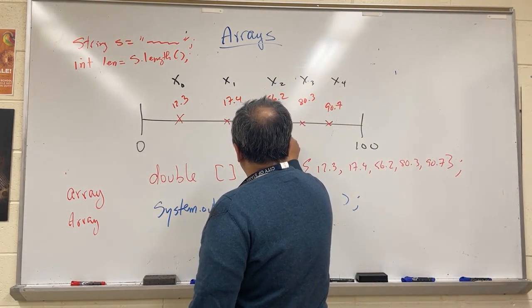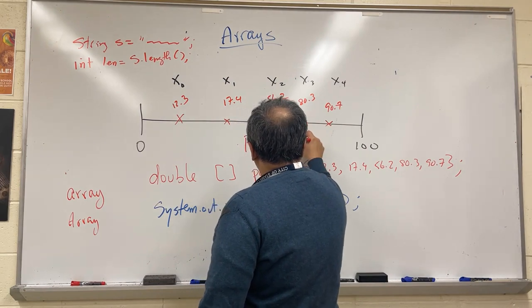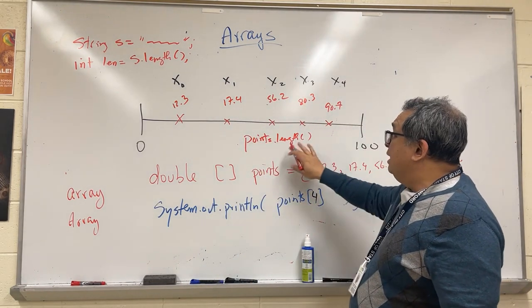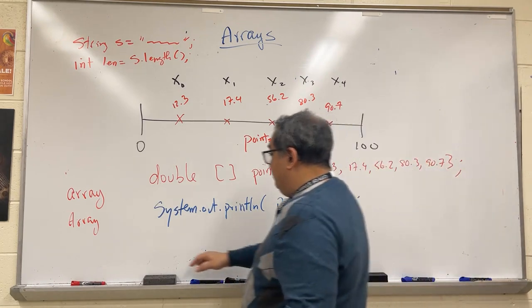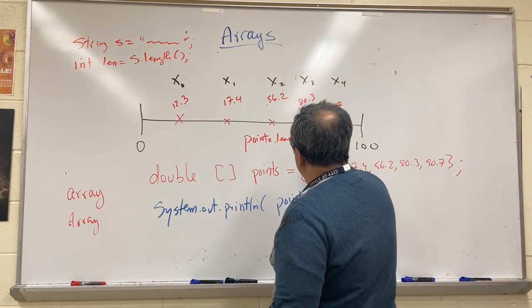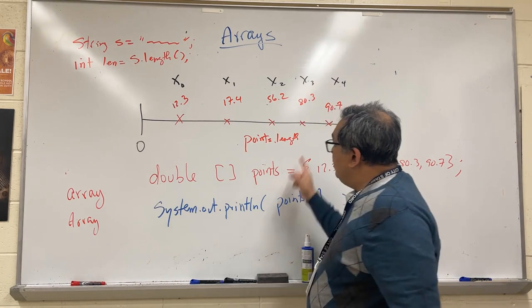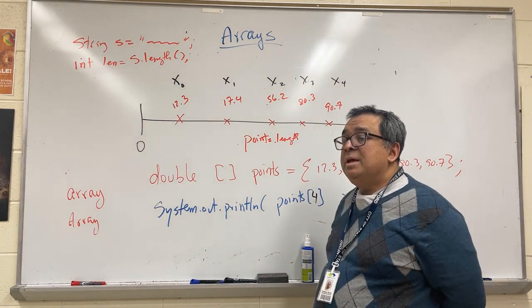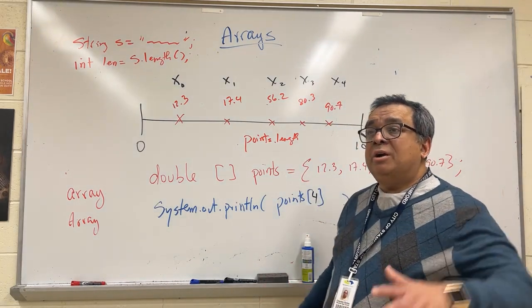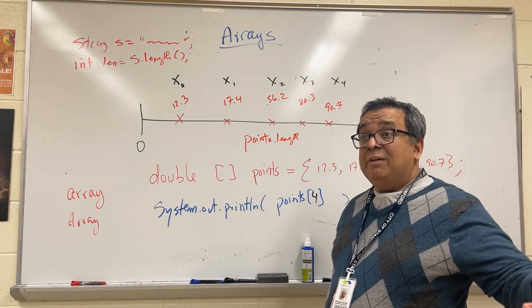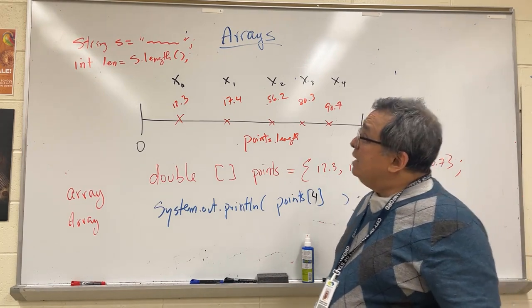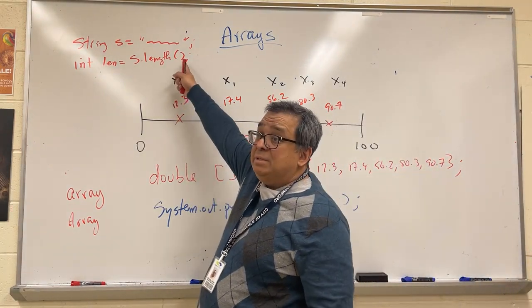Except instead of doing points.length with parentheses, it turns out that for an array, the length is actually a property of the array. It's a variable, it's a read-only variable, so I don't use the parentheses. This is kind of an unfortunate artifact of historical Java that you're going to have to live with—that the string length has parentheses and the array lengths do not.